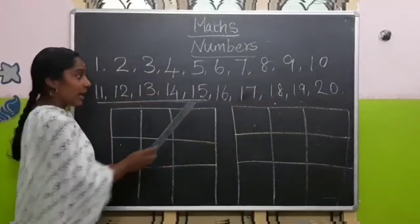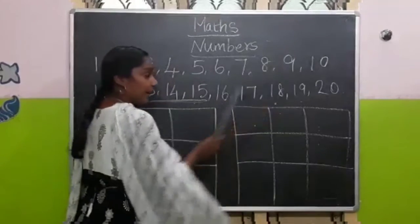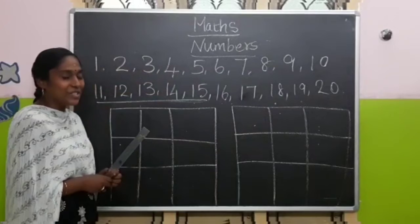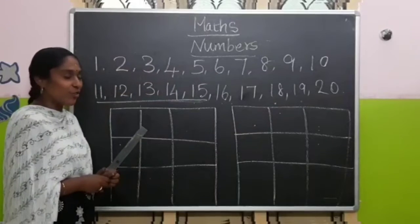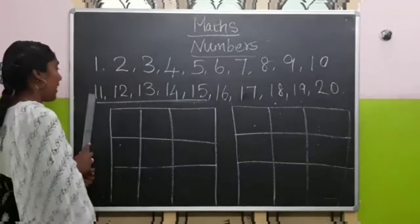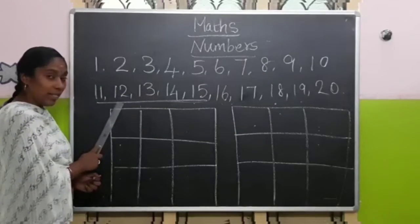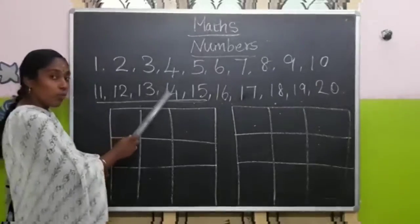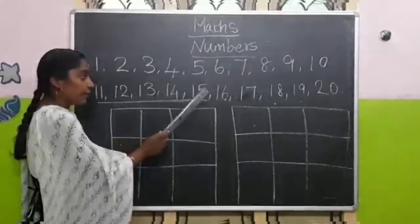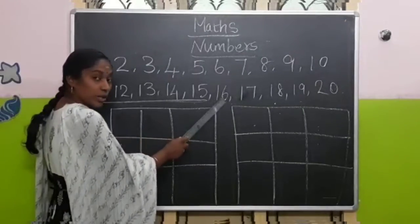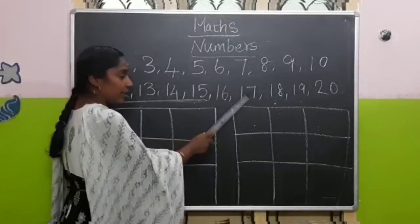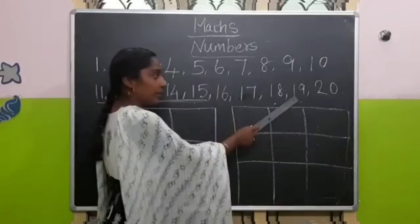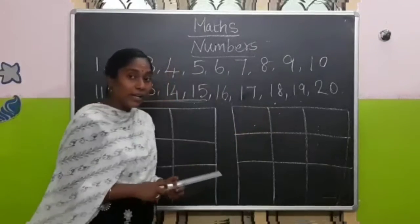Kooties, after 10 what number will come? Yes, very good children. 11, 12, 13, 14, 15, 16, 17, 18, 19, 20.